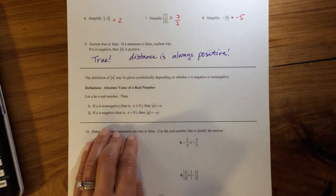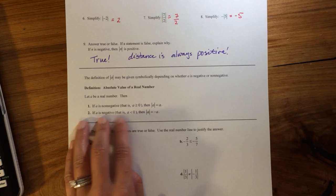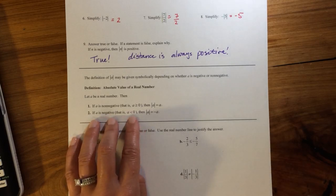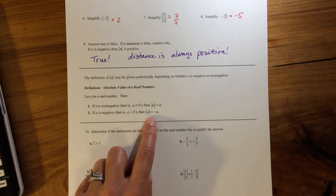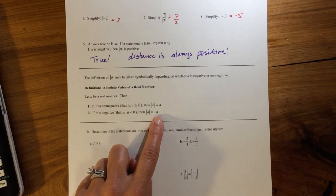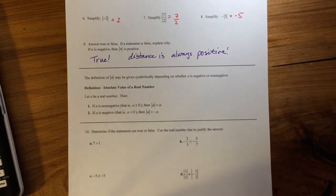If A is negative, that means that A is less than 0, then the absolute value of A is equal to negative A. So here on this one, what it's saying is going backwards.